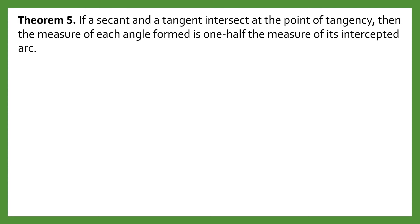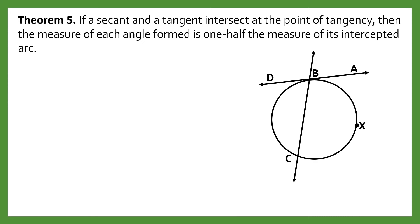Here we have Theorem number 5. If a secant and a tangent intersect at the point of tangency, then the measure of each angle formed is one half the measure of its intercepted arc. Here in the figure is the secant and the tangent — they intersect at the point of tangency and form angles. The measure of each angle formed is one half the measure of its intercepted arc.